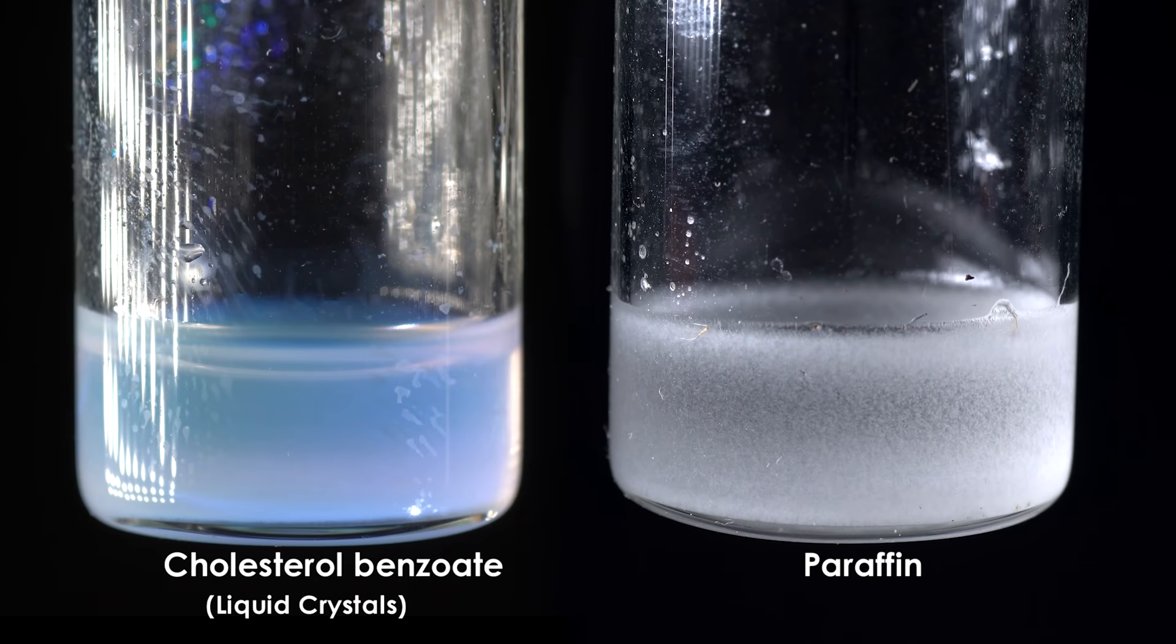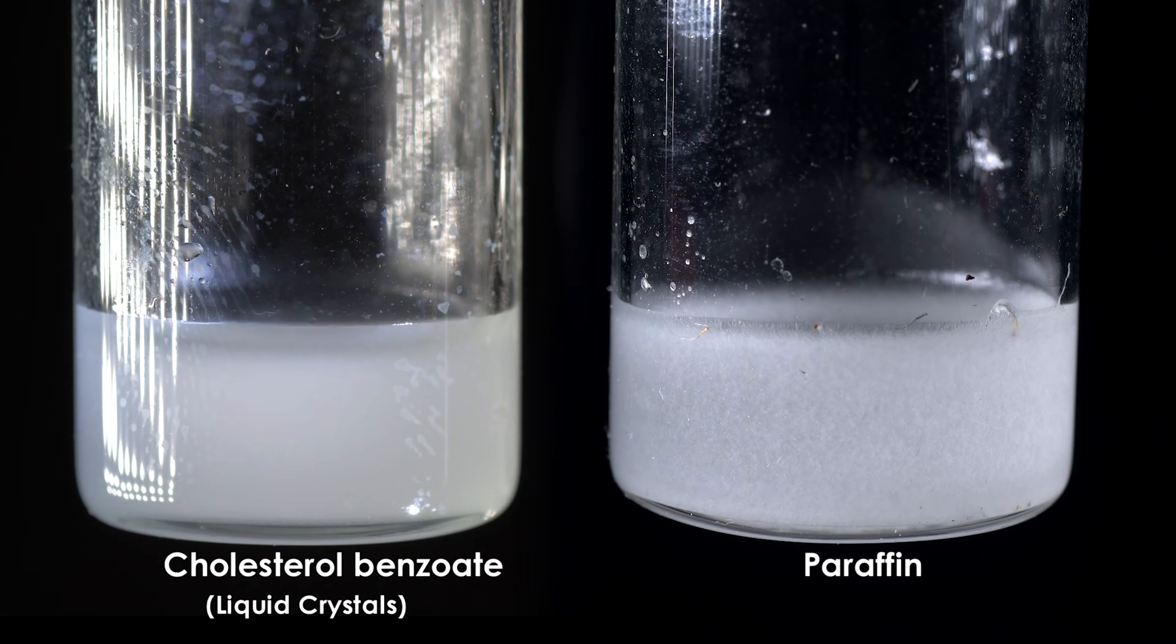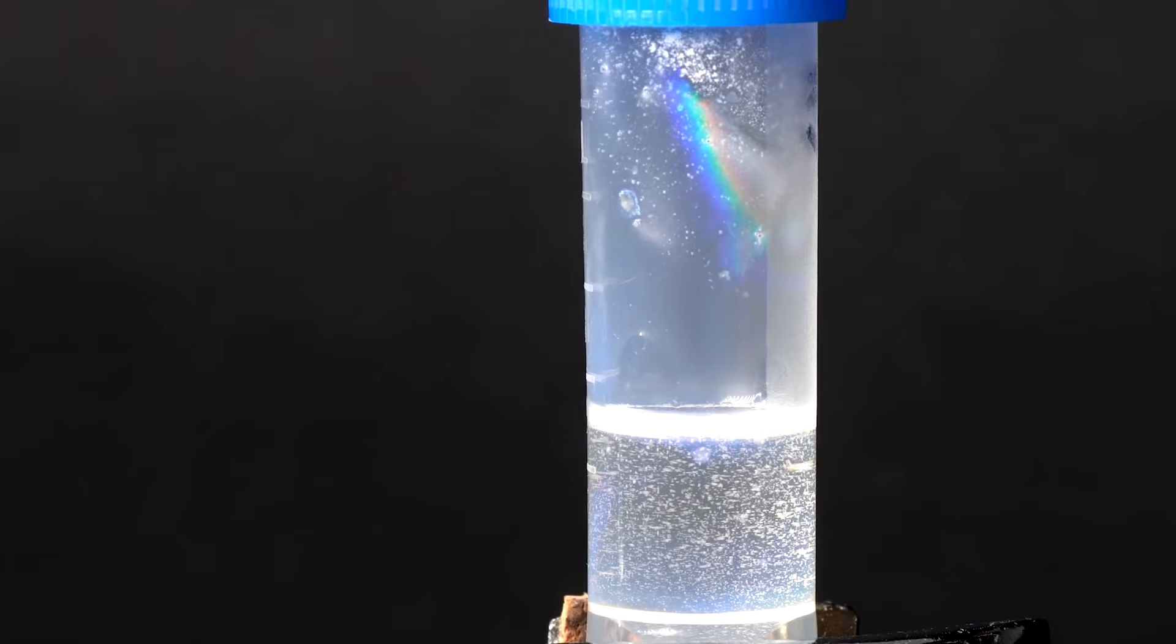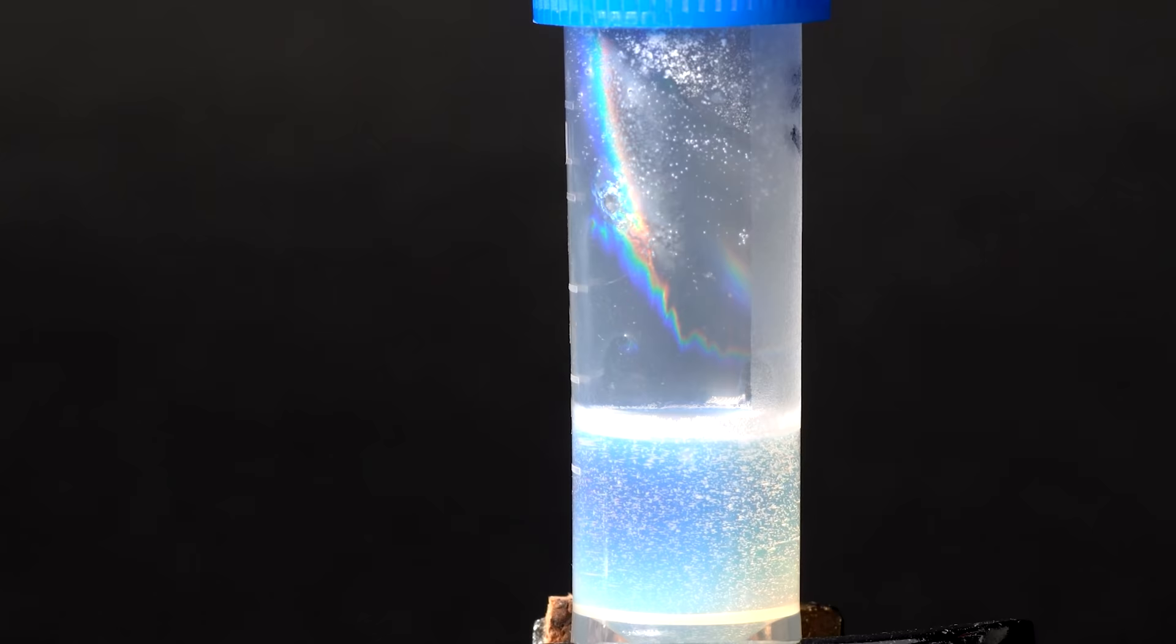In the 19th century, this very experiment was used to discover the formation of liquid crystals. The scientific term describing such chemicals, which reflect light, is cholesteric liquid crystals.